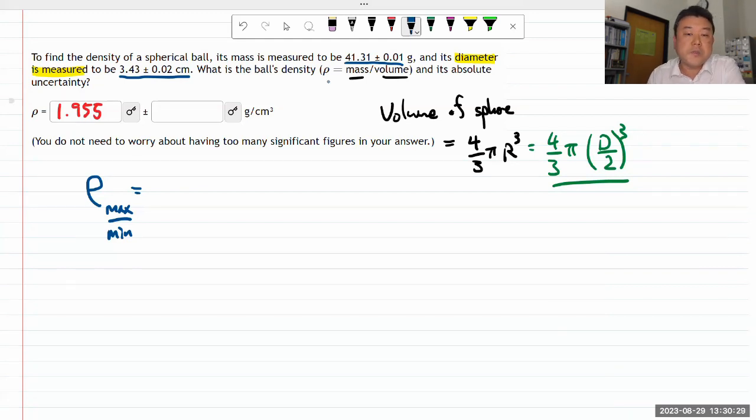For mass, what I have to enter is going to be the largest possible mass within the uncertainty, so it'll be 41.31 plus 0.01 gram. For my volume, I'm going to leave everything else as formula.